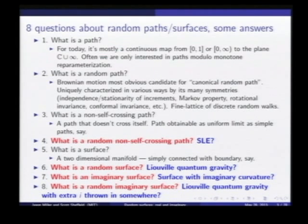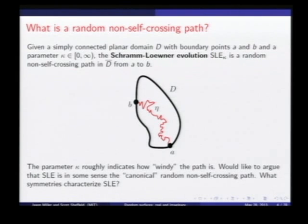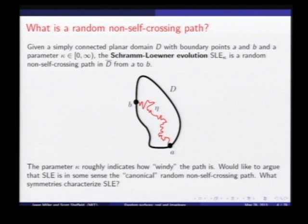These are the eight questions and this is my goal. I think I've answered four of them, so it's just these four I really have to get to by the end of the talk. So for a non-self-crossing path: if I'm given a simply connected planar domain D with boundary points A and B and a parameter kappa, then this Schramm-Loewner evolution, which we call SLE kappa, is a random non-self-crossing path in the closure of the domain from A to B. The parameter kappa indicates roughly how windy the path is — small kappa is more or less a smooth path, and large kappa is much more windy.